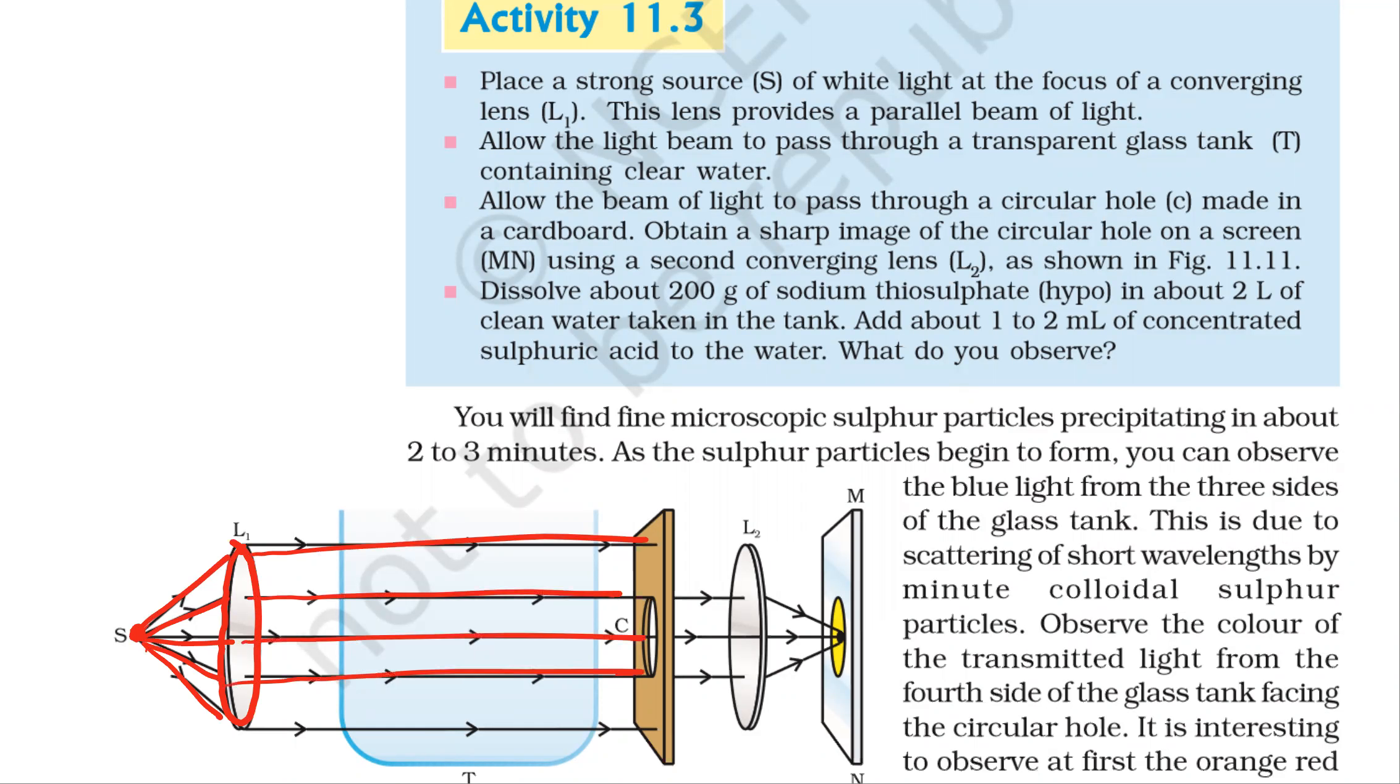Allow the light beam to pass through a transparent glass tank containing clear water. Allow the beam of light to pass through a circular hole made in a cardboard. Obtain a sharp image of the circular hole on the screen.